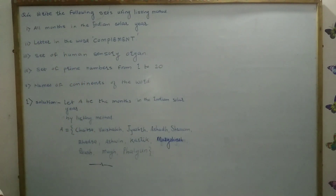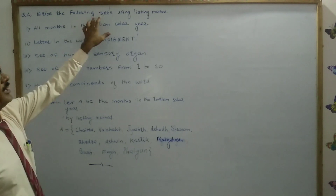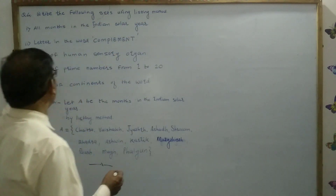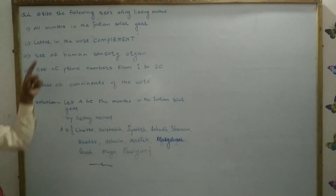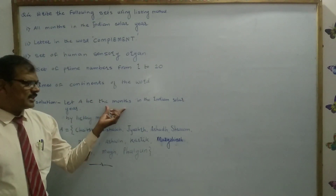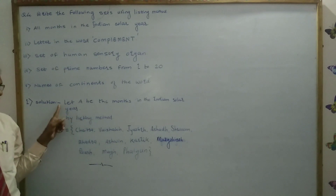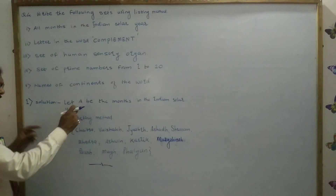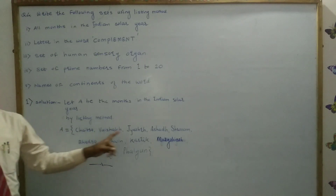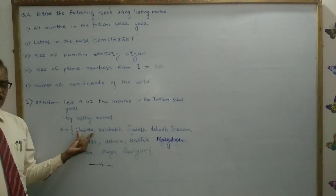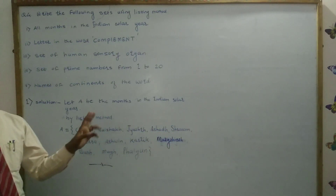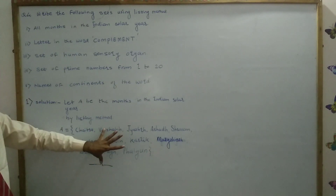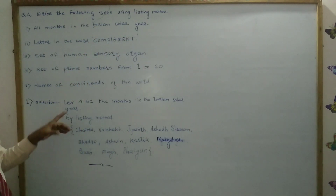We start question number 4 in exercise 1.1. In question number 4, write the following set by using listing method. First problem: all the months in the Indian solar year, that is called the Marathi month. Solution: let A be the set of months in the Indian solar year. By listing method, A is the set — write the months in that solar year: Chetra, Veshach, Jester, Ashad, Shravar, Bhadra, Ashwin, Karthik, and so on. These are the months of the Indian solar year by listing method.